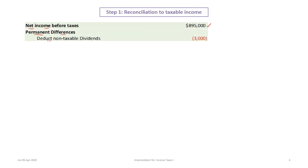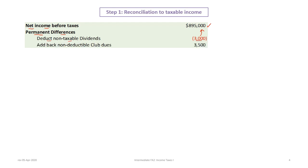The first permanent difference is non-taxable dividends. The company received dividends from another company, and dividends between companies are not taxable. We deduct $3,000 because that amount is included in the $895,000 income. Then we look at adding back non-deductible items. The first is club dues or golf club dues — those promotional expenses are 100% non-deductible and must be added back so tax is properly calculated on them.